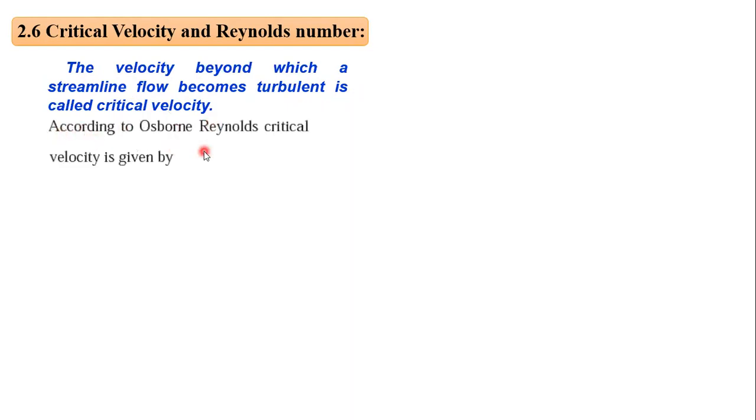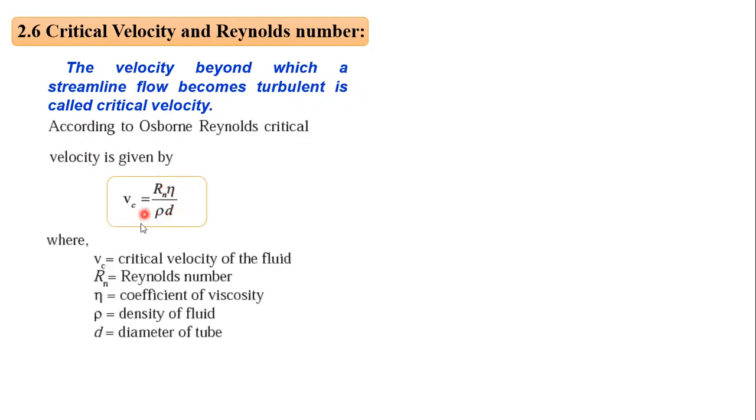According to Renault, critical velocity is given by the formula: v_c = (R_η × η) / (ρ × d). In this formula, v_c is critical velocity, R_n is Reynolds number, η is coefficient of viscosity, ρ is density of the fluid, and d is diameter of the tube.